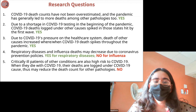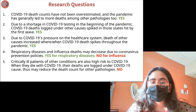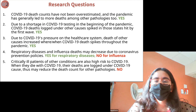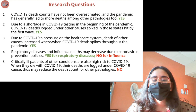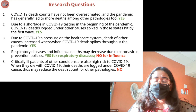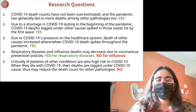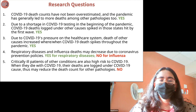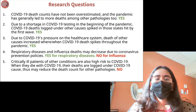Our first hypothesis was supported: COVID death counts have not been overestimated, and the pandemic did lead to more deaths overall. The second was also supported: in early months, especially in hard-hit states like New York, a shortage of testing kits meant people who died of both COVID and another cause were logged under the secondary cause, spiking those fatality counts. The third was supported: COVID caused immense pressure on the healthcare system, with spikes in COVID mirroring spikes in other causes of death. The fourth was partially supported: respiratory diseases decreased, but influenza did not. The fifth was not supported: critically ill people with COVID were not overwhelmingly classified as COVID deaths.